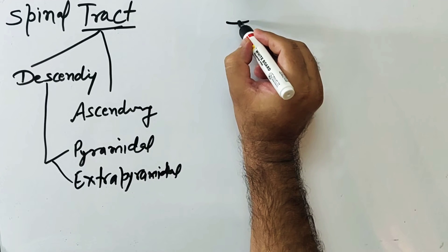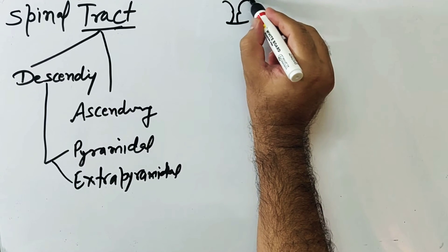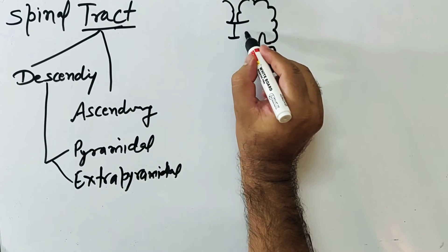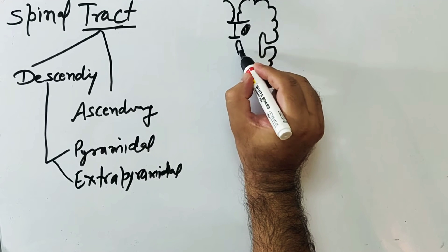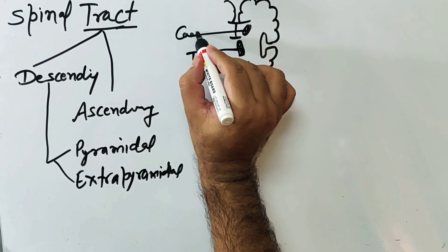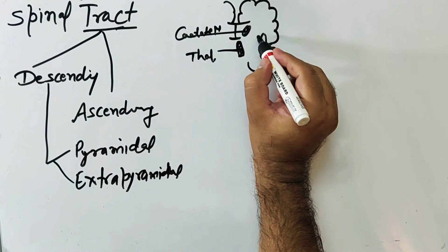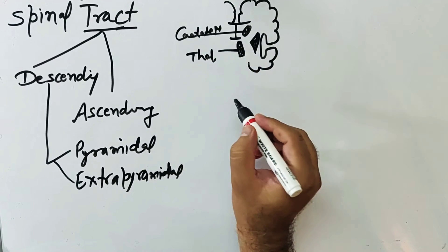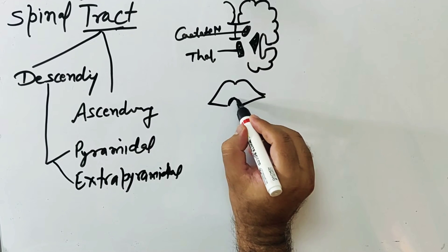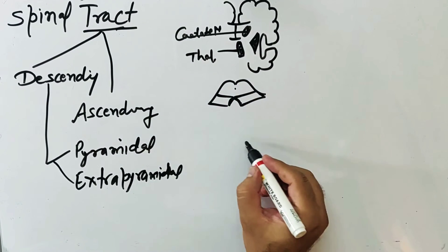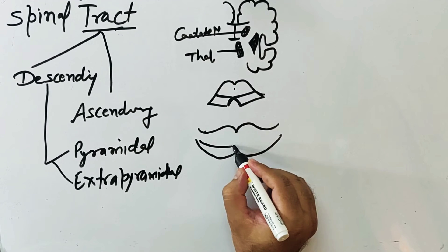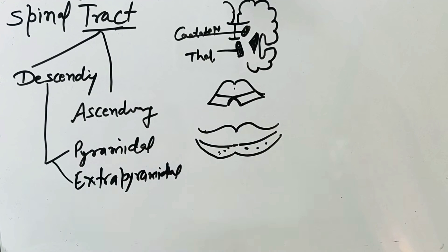Here is a diagram of the cerebrum. This is the caudate nucleus, this is the thalamus, this is the caudate nucleus, and here is the lentiform nucleus. Here is the position of the midbrain and here is the pons. This lower part is the basilar part of the pons.